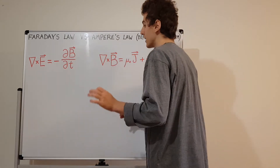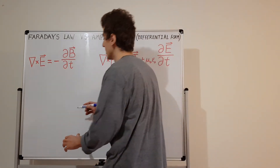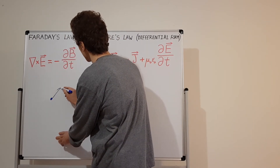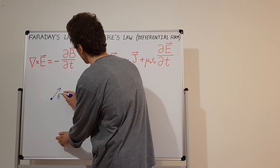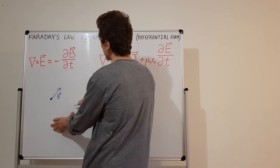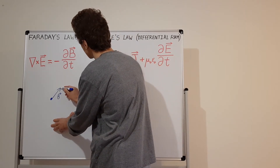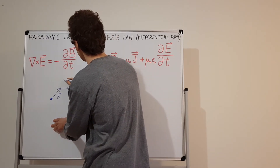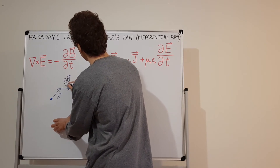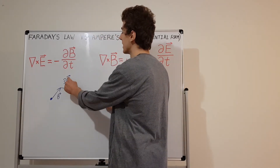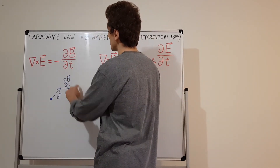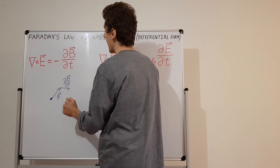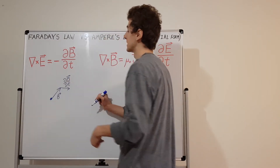Let's look at a single point in three-dimensional space. This point has a magnetic field — let's say the B field is pointing in a certain direction. We can also introduce a smaller vector representing the change in the magnetic field, dB/dt, written with partial derivative notation since it's a partial derivative with respect to time. The curl of E would be the negative of this dB/dt vector, telling us how the electric field circulates in three-dimensional space.